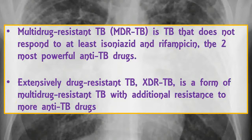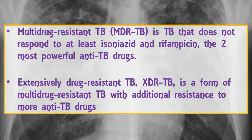Extensively drug-resistant TB (XDR-TB) is a form of multi-drug resistant TB with additional resistance to more anti-TB drugs, and therefore responds to even fewer available medicines. It has been reported in 117 countries worldwide. The overall prognosis for adults with XDR-TB is poor with high mortality. According to the WHO, in 2016 there were an estimated 490,000 new cases of MDR-TB worldwide, of which about 6.2% were XDR-TB.